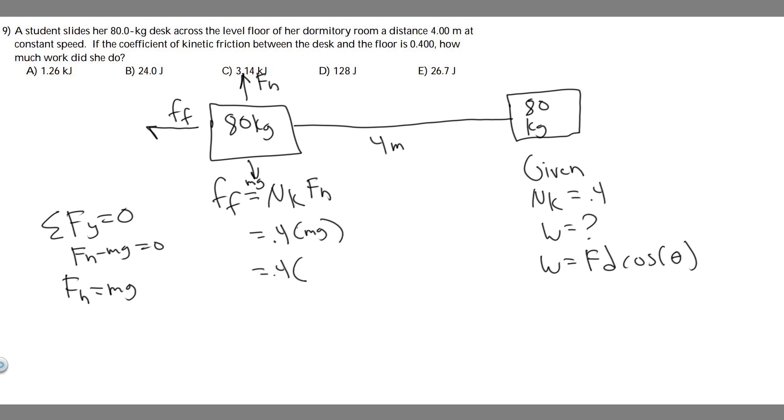So if we solve it, it's 0.4 times the mass, which we know is 80 kilograms, times g, the acceleration due to gravity. I'm going to use 9.81. So this is the force of friction here, and I'm just going to leave it in this form when we solve.